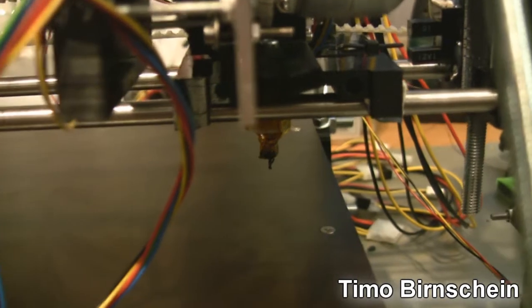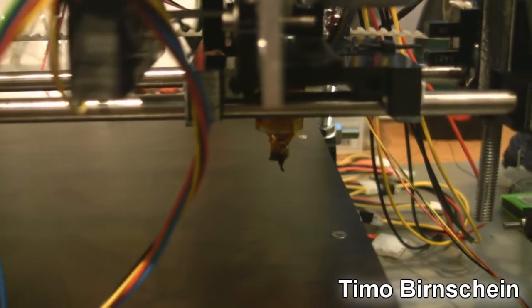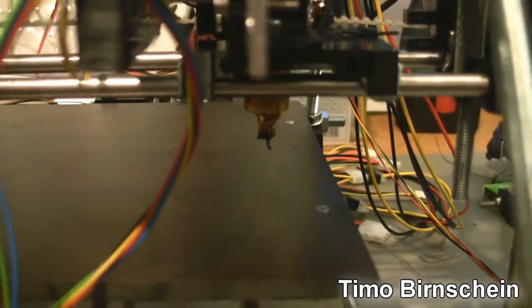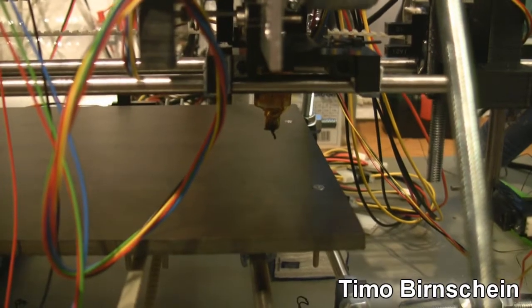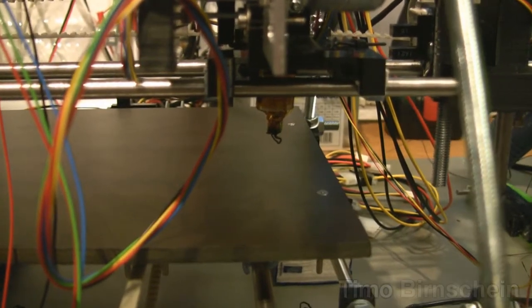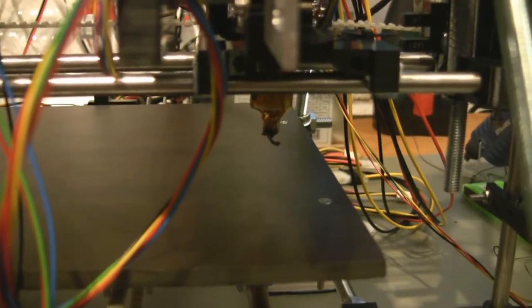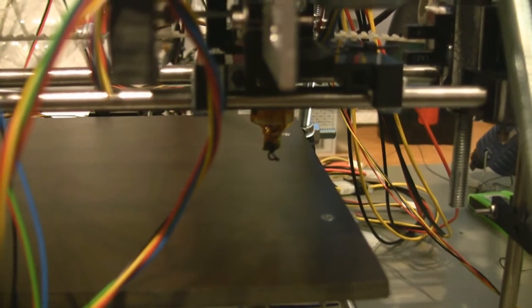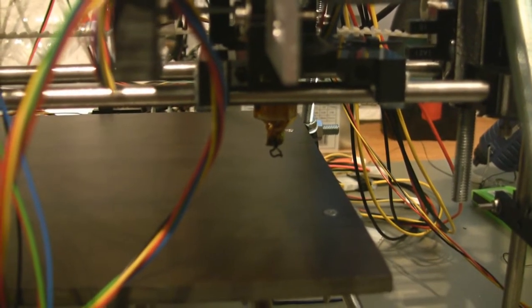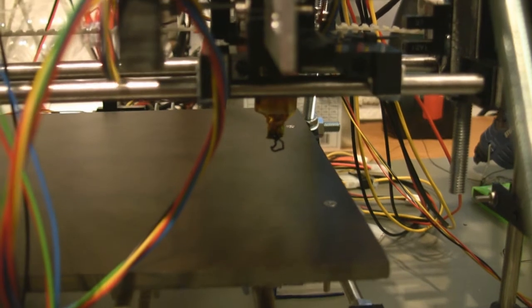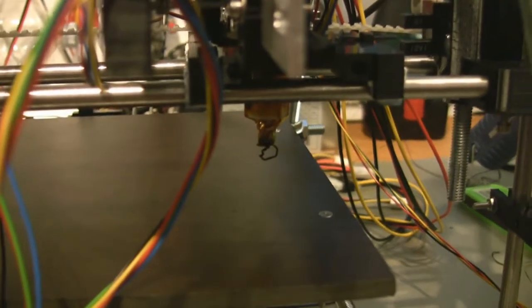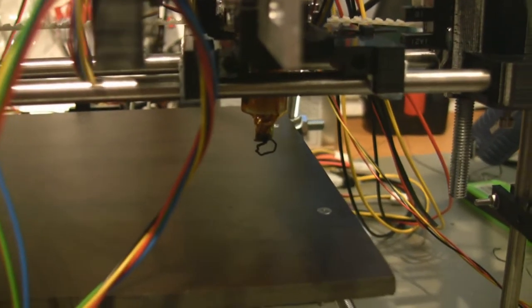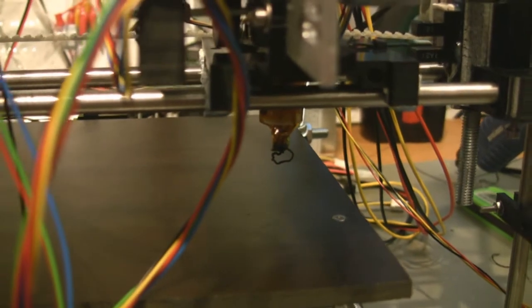All right guys, this is my slightly wildly constructed Mendel Prusa, and as you can see I just started printing a belt clamp. My extruder is waiting for a cooldown because it was at 230 degrees Celsius. When it's at 200 it will start printing.